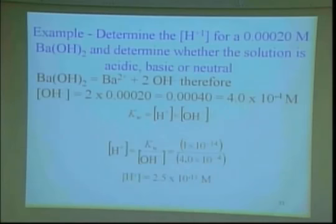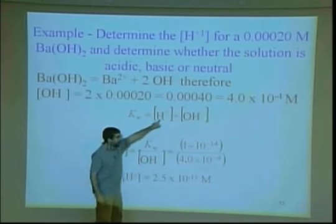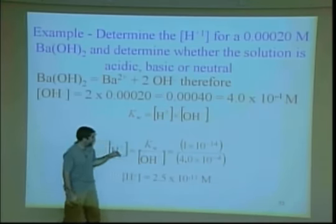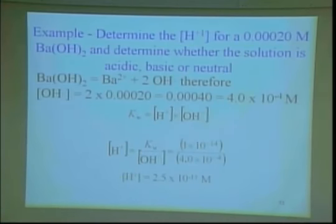I asked for the hydrogen ion concentration. How do you get it given hydroxide? Remember that Kw equals the H concentration times the hydroxide concentration, both equal to 1×10⁻¹⁴. So hydrogen concentration equals Kw divided by the hydroxide concentration: 1×10⁻¹⁴ divided by 4×10⁻⁴. The answer is 2.5×10⁻¹¹.